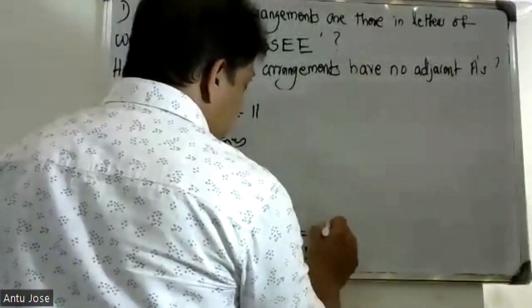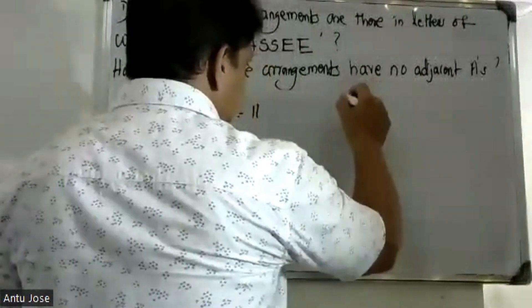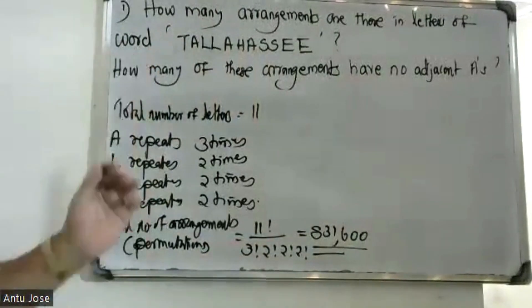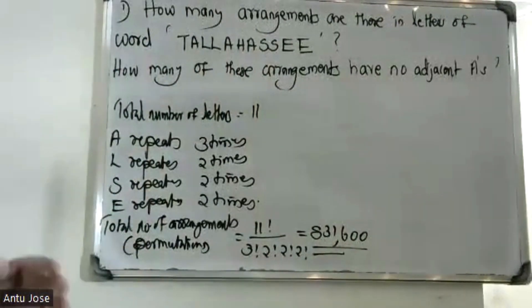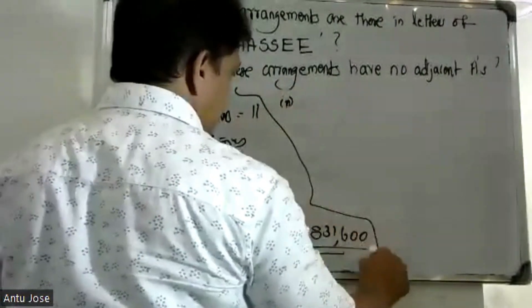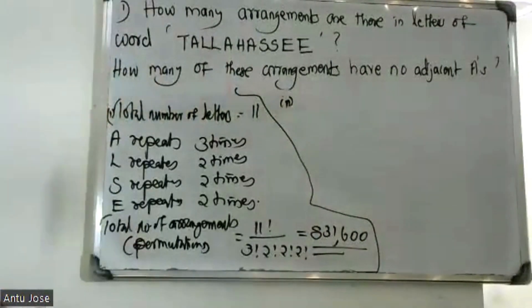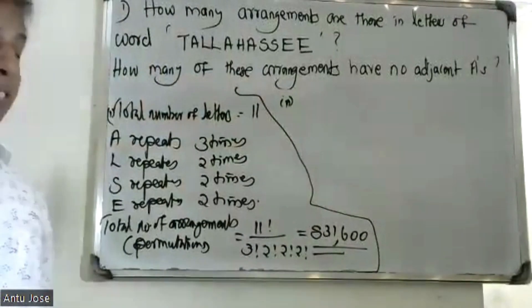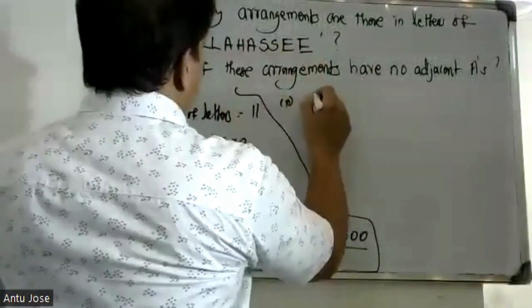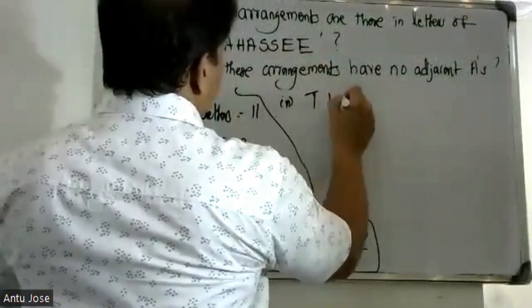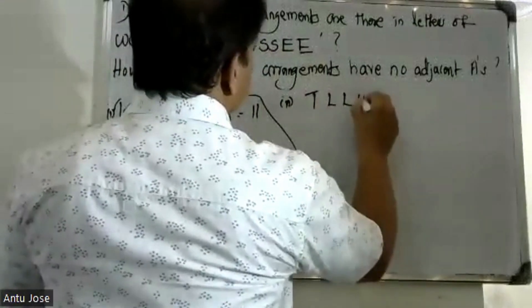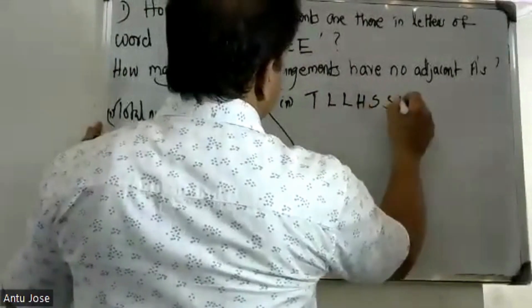For the second question — how many of these arrangements have no two A's adjacent — we list the letters: A, T, L, L, A, A, H, A, S, E, E.